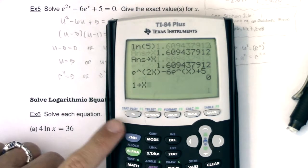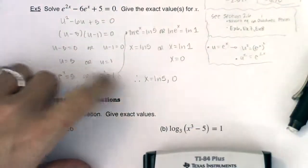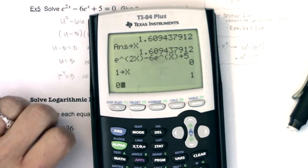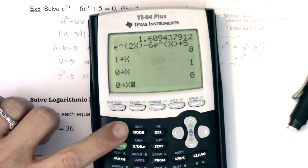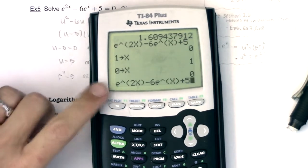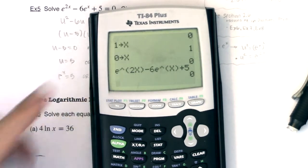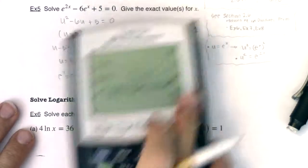And I could do the same thing, I could store, not 1 into x, what was our other x value? 0, excuse me. 0 into x, and I could run that expression again, and when I hit enter, I still get 0. So both of those solutions are working.